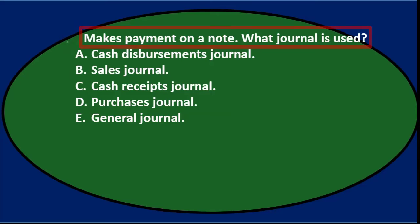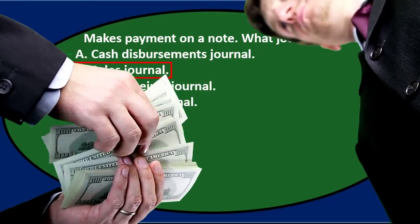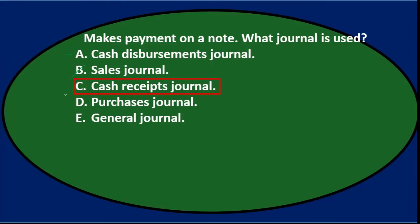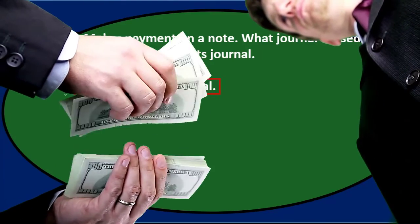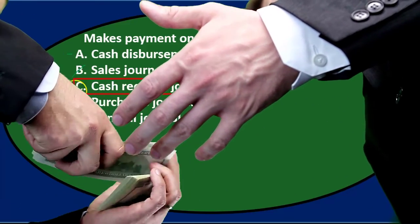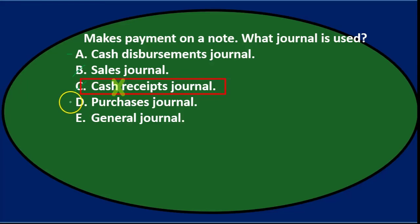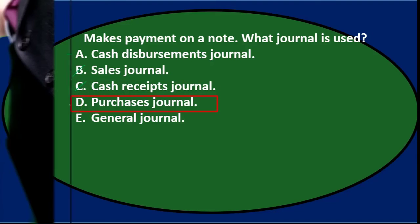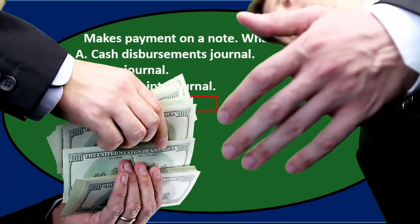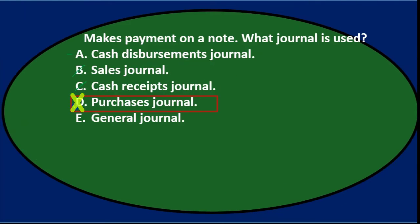Makes payment on a note — what journal is used? A. Cash disbursements journal — that would be used when we disperse cash, and it looks like we did here since we made a payment on a note, so I'll keep that. B. Sales journal — we didn't sell anything, we're paying off a loan, so it doesn't belong in sales. C. Cash receipts journal — we got money in the past when we took out the loan, but now we're paying it back, so cash is going down not up — no receipts. D. Purchases journal — we're not purchasing anything, we're just paying back the loan. E. General journal — only used as default if we can't fit it anywhere else, I'll keep that for now. We're left with A and E.